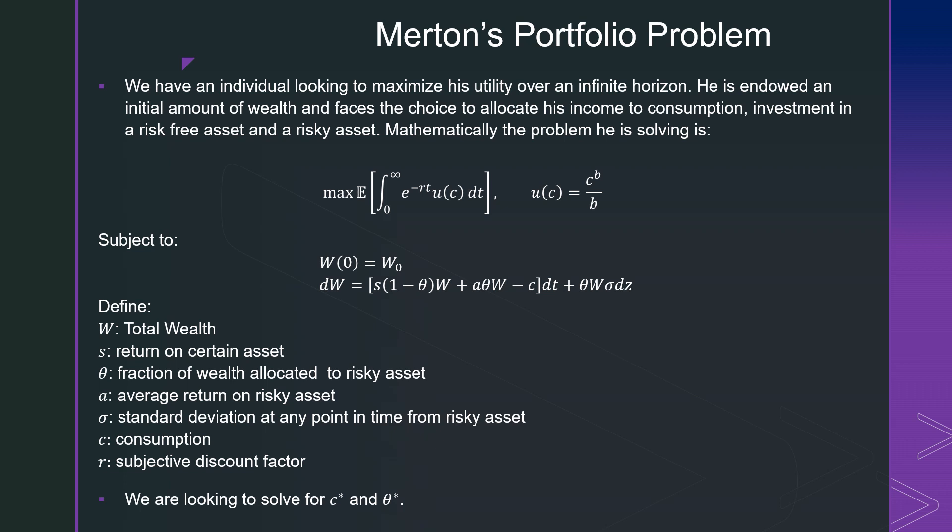Merton's portfolio problem could be written as follows. We have an individual who's looking to maximize his utility over an infinite horizon. He's endowed an initial amount of wealth and faces the choice to allocate his income to consumption, investment in a risk-free asset, and a risky asset. Mathematically, the problem is proposed as maximizing his expected infinite series of discounted utilities, with a specific CES utility function to make the algebra simple, subject to an initial wealth endowment W naught. The law of motion of wealth describes how wealth moves over time as he invests in a risky asset with return A, a risk-free asset with return S, and his consumption at each moment.